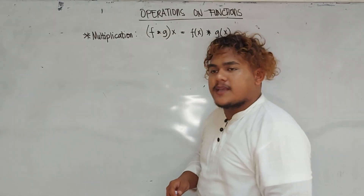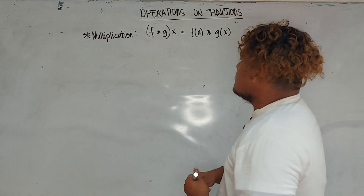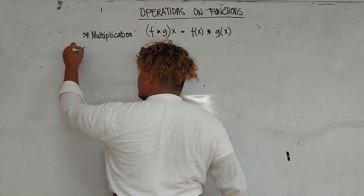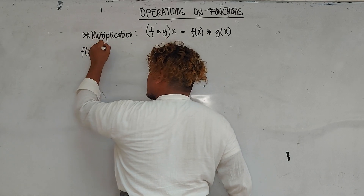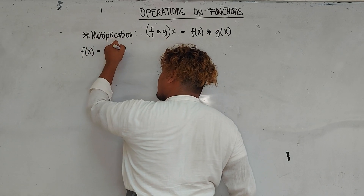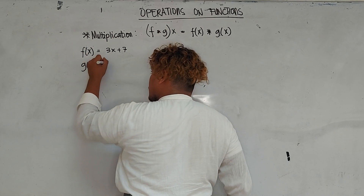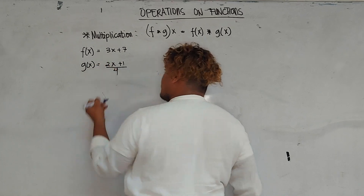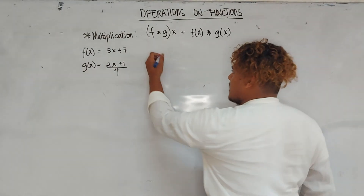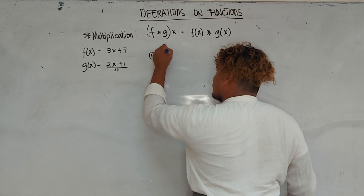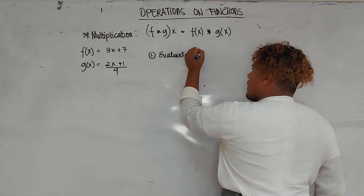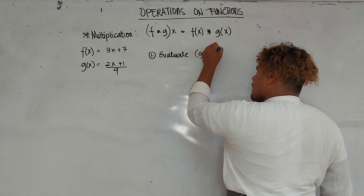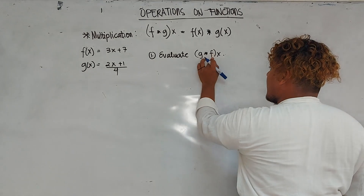Again, the concept goes like this: f times g of x is equal to f of x times g of x. For example, the given are f of x equals 3x plus 7, and g of x equals 2x plus 1 over 4. Find and evaluate g times f of x.